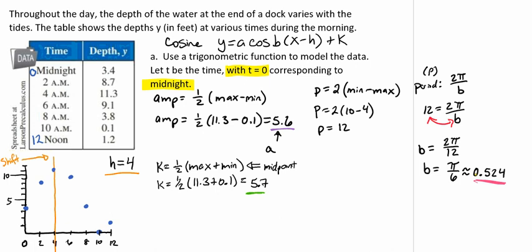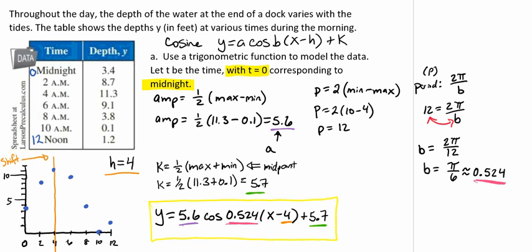Now we have our a, b, h, and k, and we're ready to plug that into the equation: y equals 5.6 times the cosine of 0.524 times the quantity x minus 4 plus 5.7. This is our trigonometric model to represent our data.